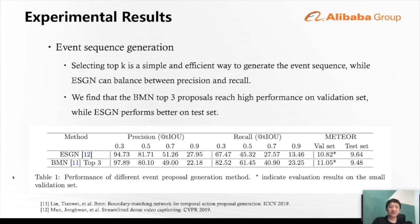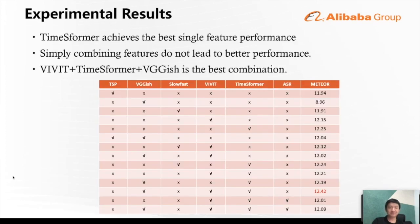For event sequence generation results, selecting top-K is a simple and efficient way to generate the event sequence, while ESGN can balance between precision and recall. We find that BMN top-3 proposals reach high performance on the validation set, but ESGN performs better on the test set, so we use ESGN for subsequent steps. For the first stage of training, we find TimeSformer achieves the best performance as a single feature. Direct concatenation of multiple features does not necessarily lead to better performance; ViViT plus TimeSformer plus VGGish is the best feature combination, so we keep this for all following training schemes.